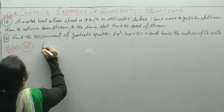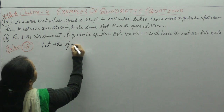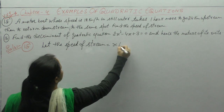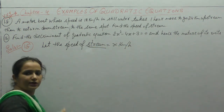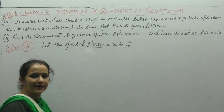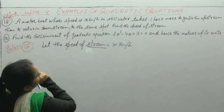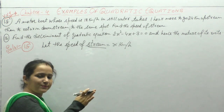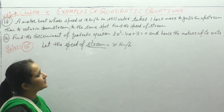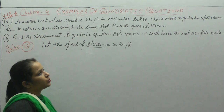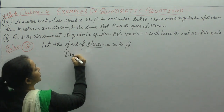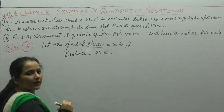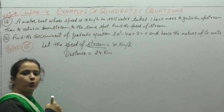Let the speed of the stream be x km per hour. Stream means if there is a river, its speed is x km per hour. The motor boat's speed in still water is 18 km per hour. The distance the motor boat needs to cover is 24 km. Going upstream takes 1 hour more.